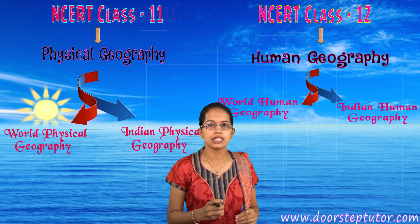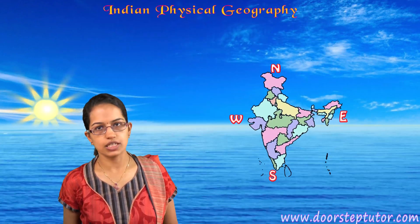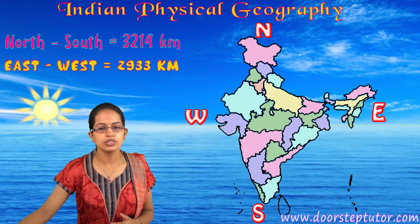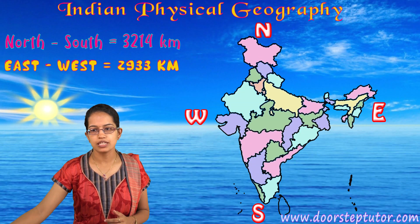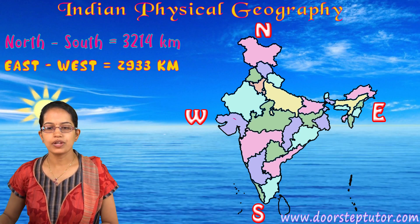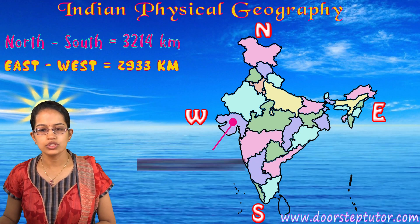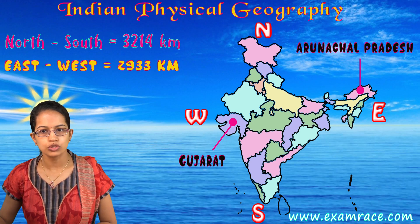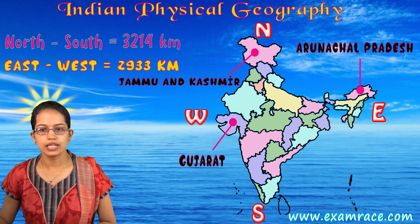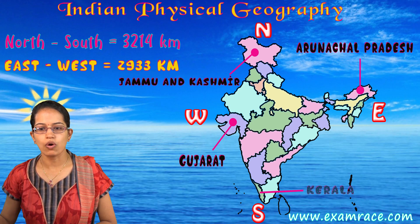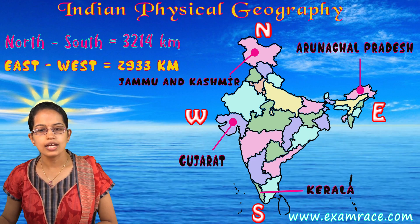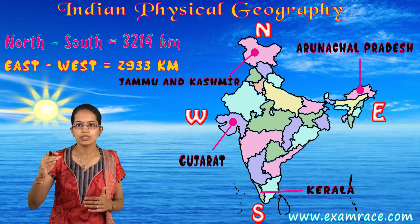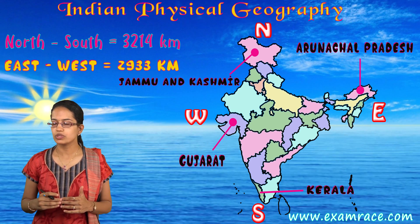This is a very introductory lecture focusing on the physical geography of India. The extent from north to south and east to west has been mentioned. Looking at the map of India, Gujarat is in the westernmost part, Arunachal Pradesh in the easternmost, Jammu & Kashmir in the north, and Kerala in the south — these are the limits of India's extent.